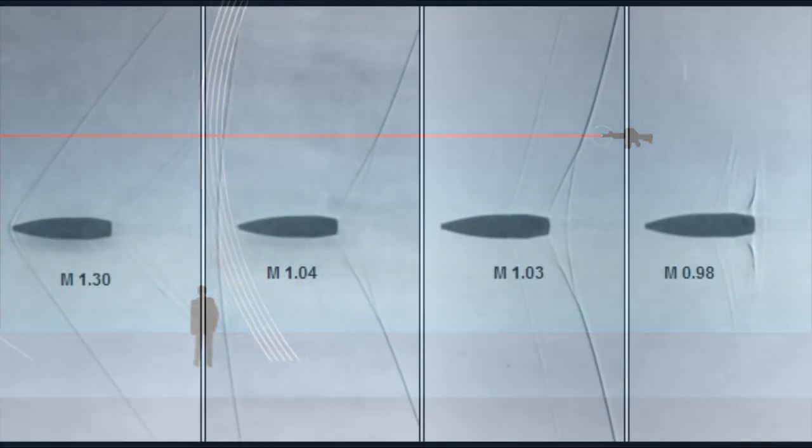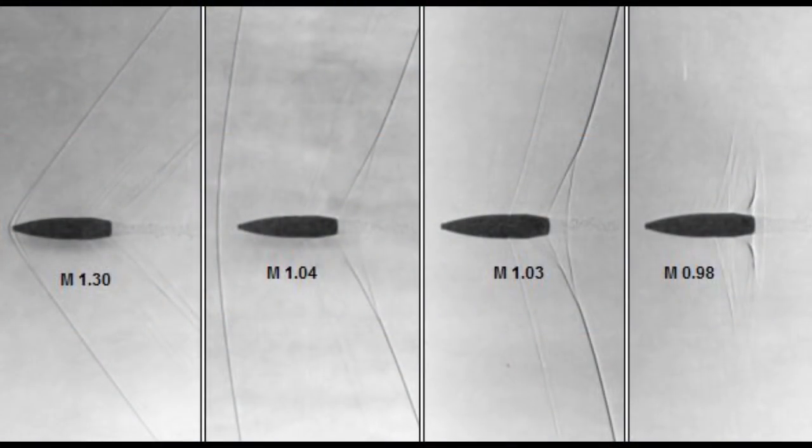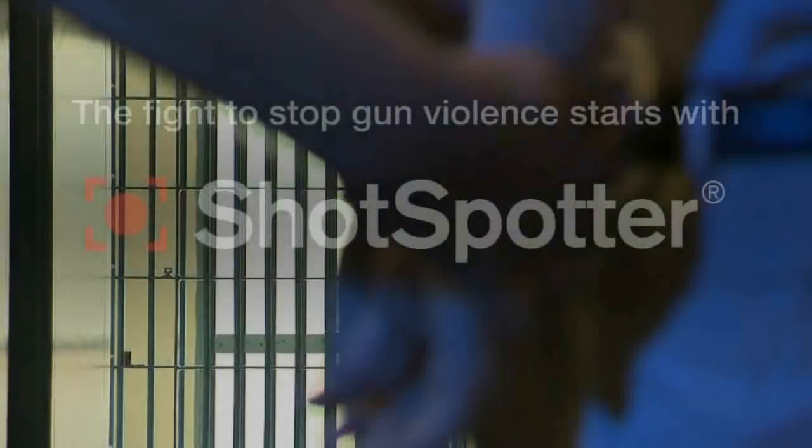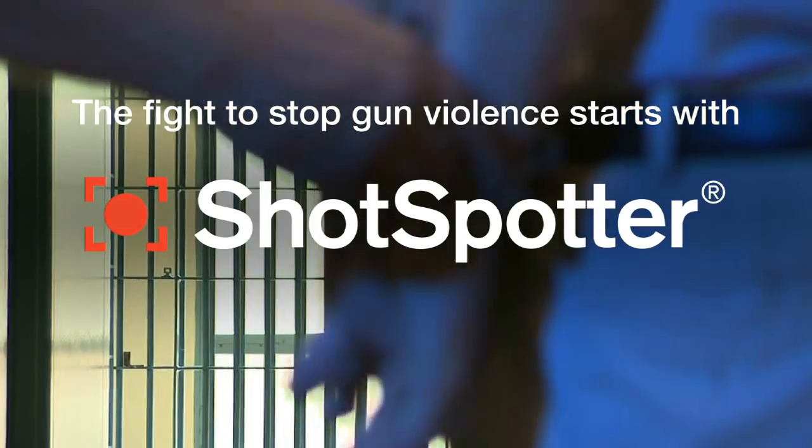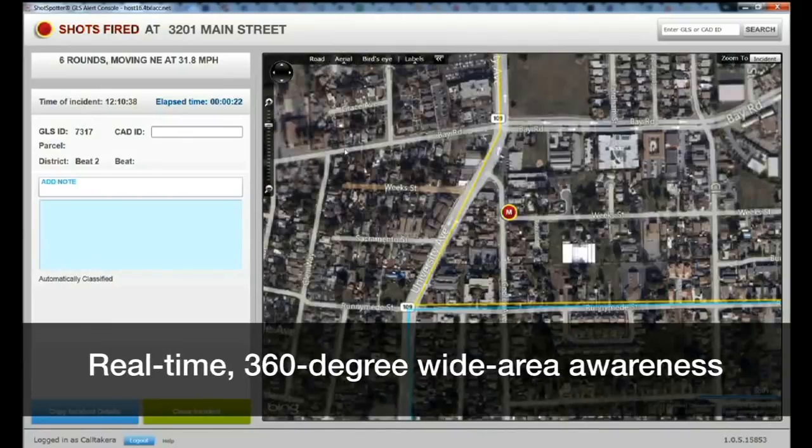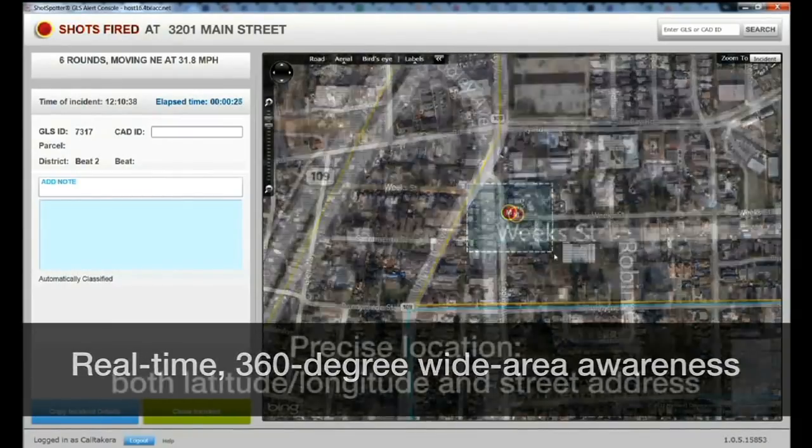The math is further compounded because as a bullet loses its speed over time, the shape of the supersonic cone flattens out, which complicates the calculation. There are professional systems used by the military and cops which can process supersonic cracks. But they use high-quality synchronized microphone arrays and complex math to backtrack the source. It's not something that can be done by amateurs.